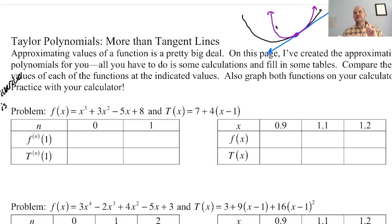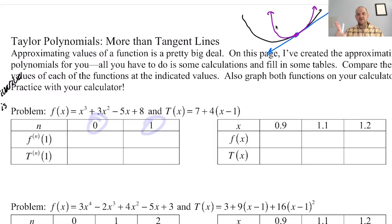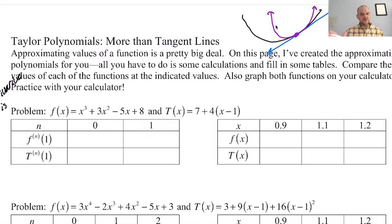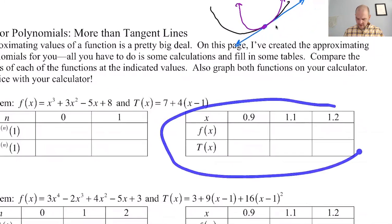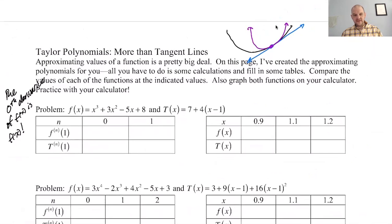The first degree Taylor polynomial: the value of the function and the value of the tangent line are the same at the point of tangency. The slope of the function and the slope of the tangent line are the same at the point of tangency. We're going to change from 'point of tangency' to 'center.' So at the center, the value of the function and value of the derivative are the same. What we're going to do is figure out the nth derivative for zero and one - the value of the function and the value of the first derivative - and compare those at x equals one, which is the point of tangency.